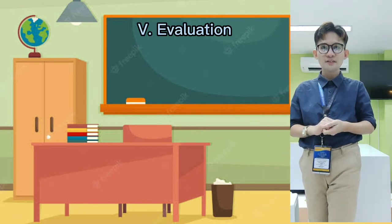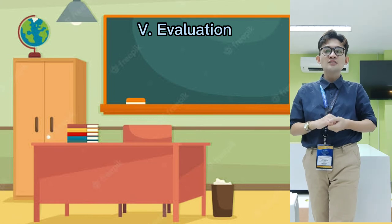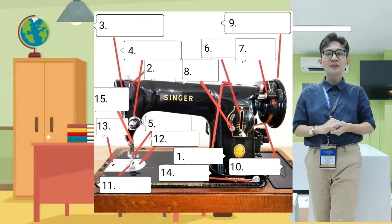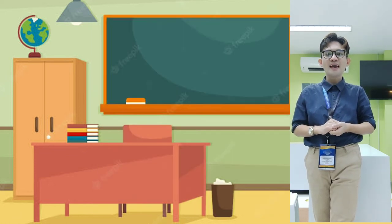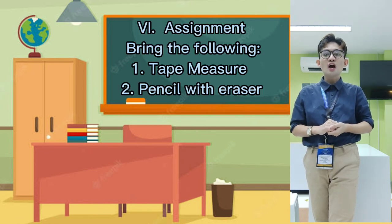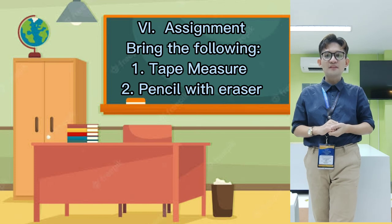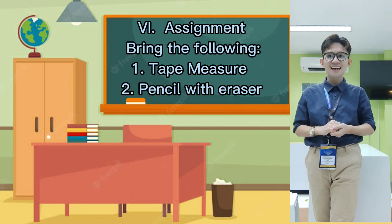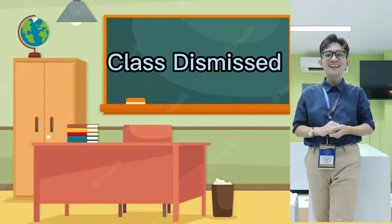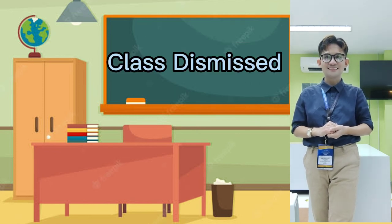For the evaluation, you are going to label the following parts of sewing machine, and you will write it on a one-fourth sheet of paper. And then, for your assignment, you are going to bring the following: first is tape measure, second is pencil with eraser. That's all. Class dismissed. Thank you.